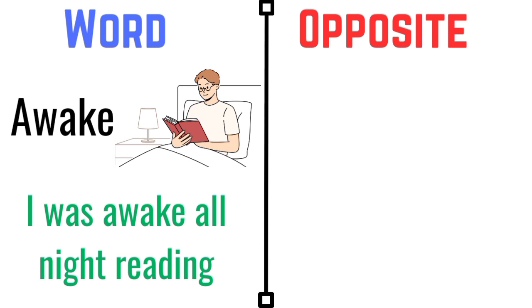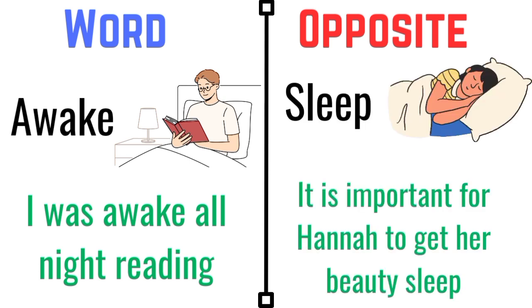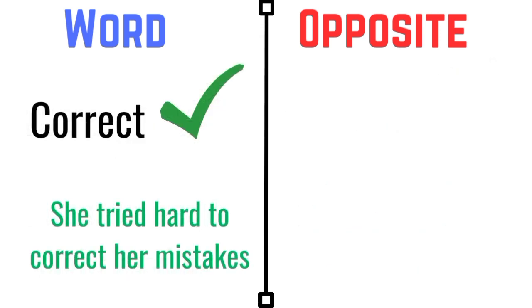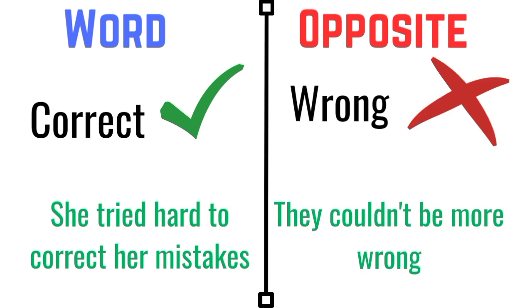Awake. I was awake all night reading. The opposite of awake is sleep. It is important for Anna to get a beauty sleep. Correct. She tried hard to correct her mistakes. The opposite of correct is wrong. They couldn't be more wrong.